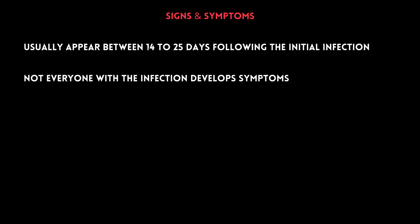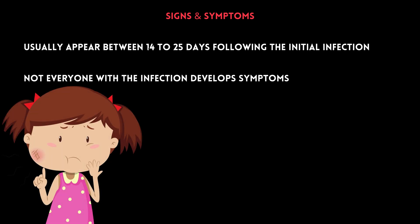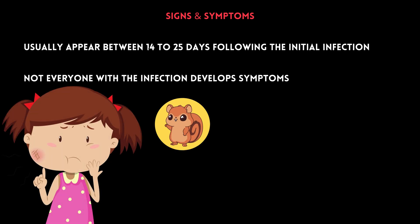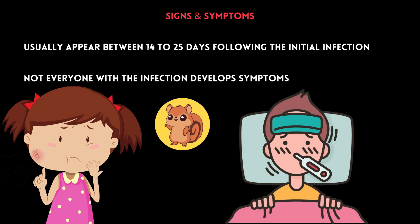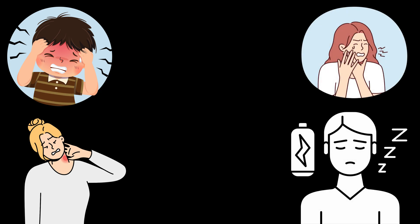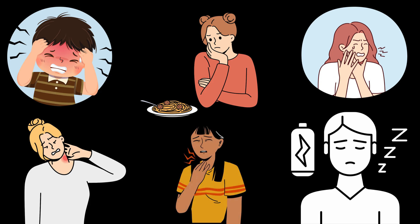However, when people develop symptoms, they may vary in severity. The characteristic sign of mumps is painful swelling of the parotid glands, which produces the look of chipmunk cheeks. Patients may also have mild to moderate fever. Additional symptoms include headache, muscle pains especially in the jaw and neck, excessive tiredness, pain on chewing and swallowing, loss of appetite, and throat pain.